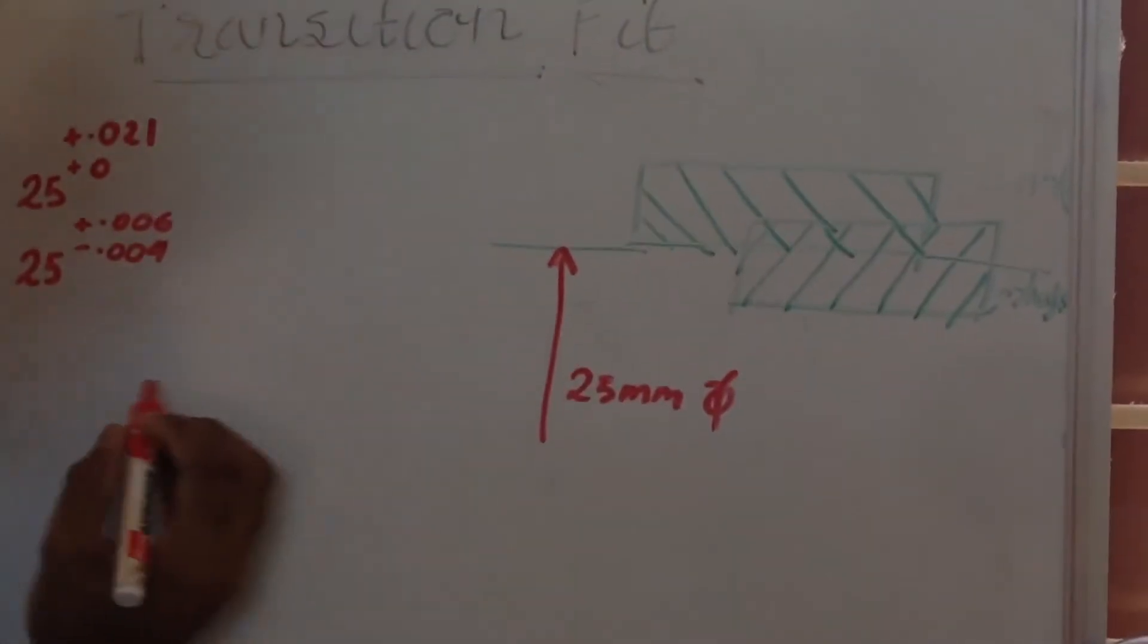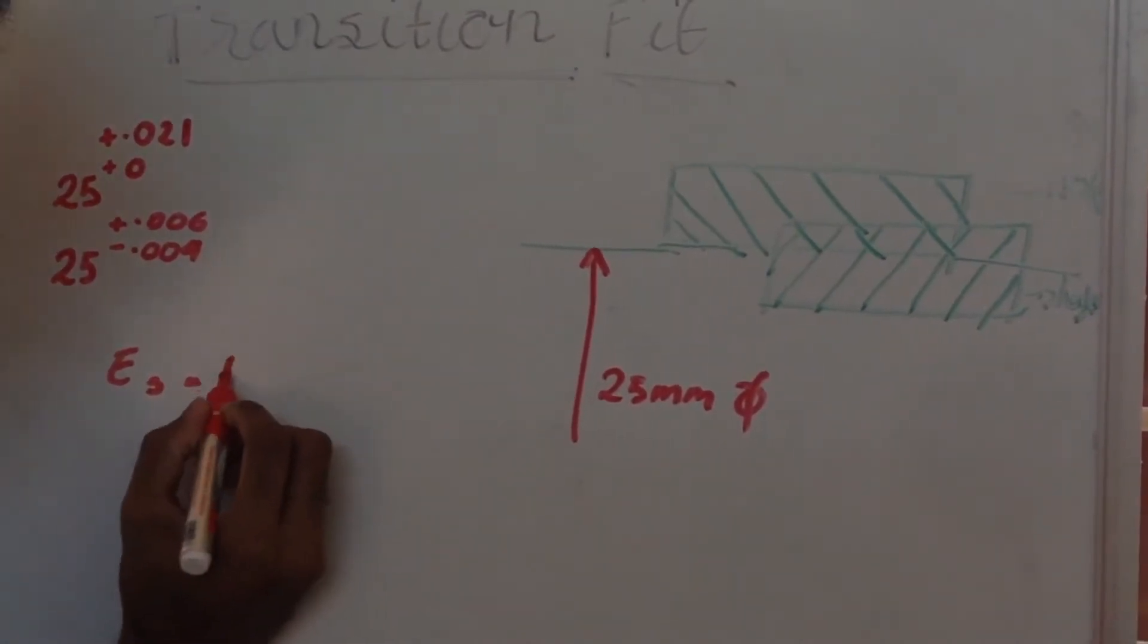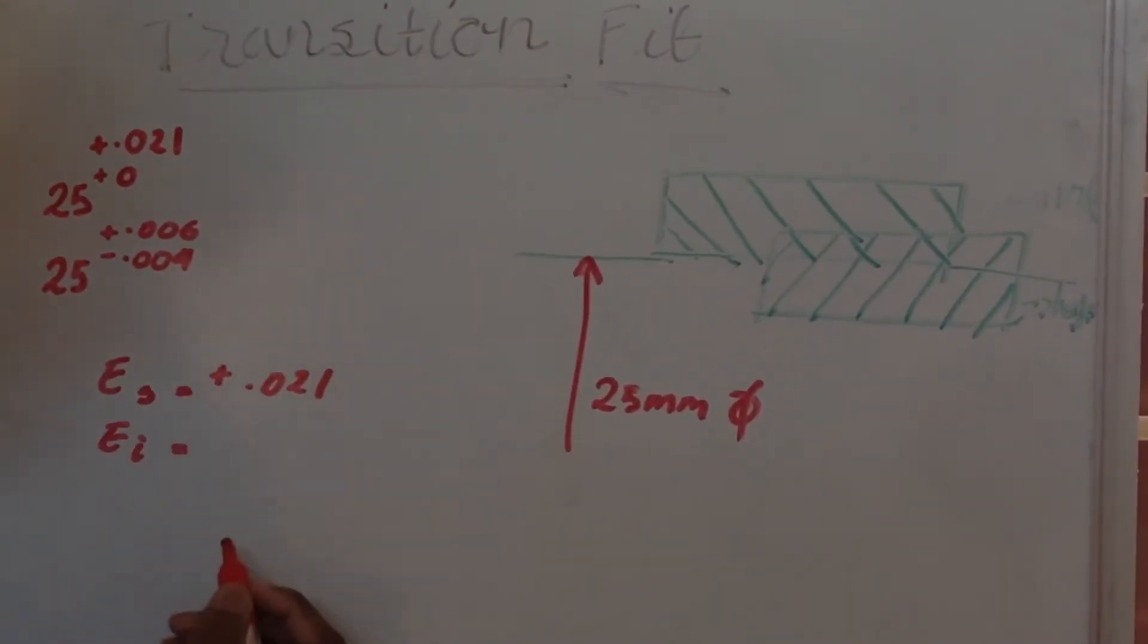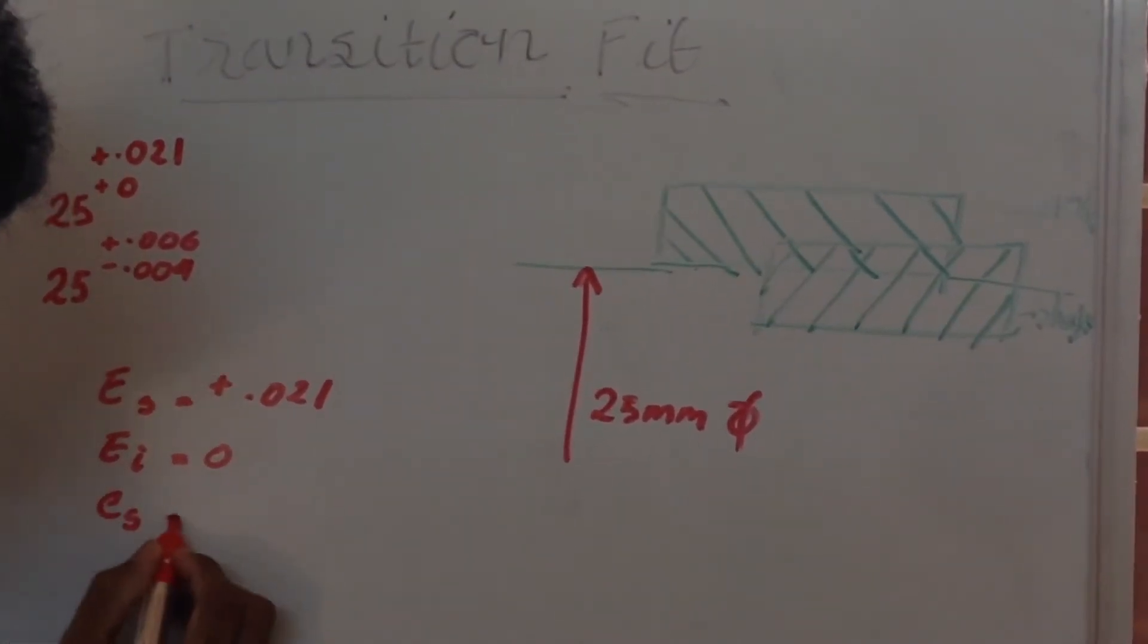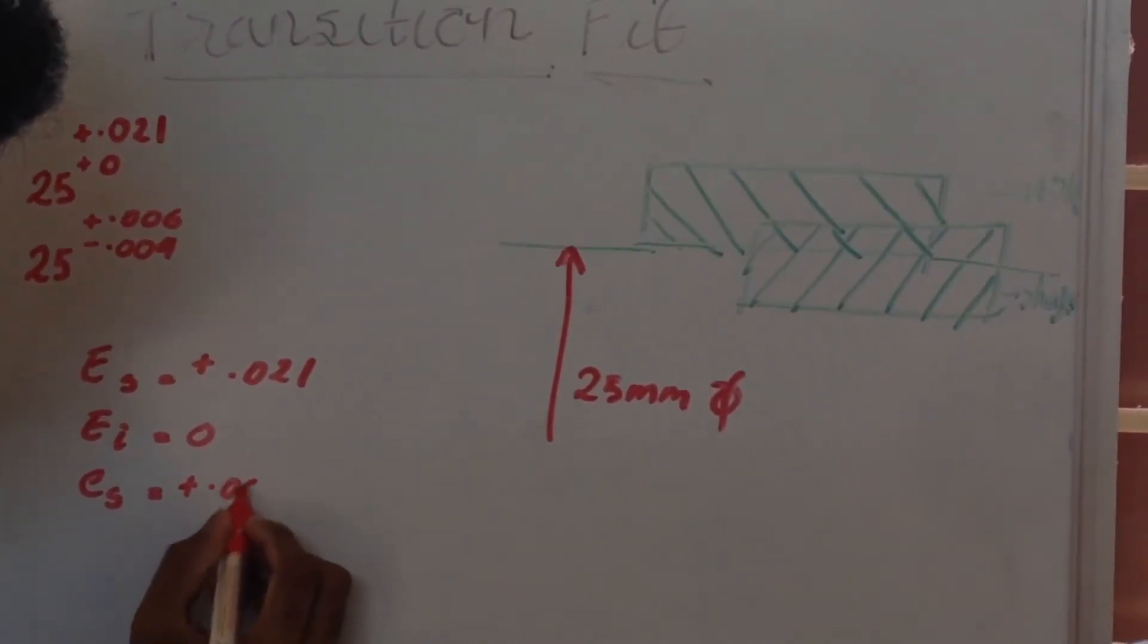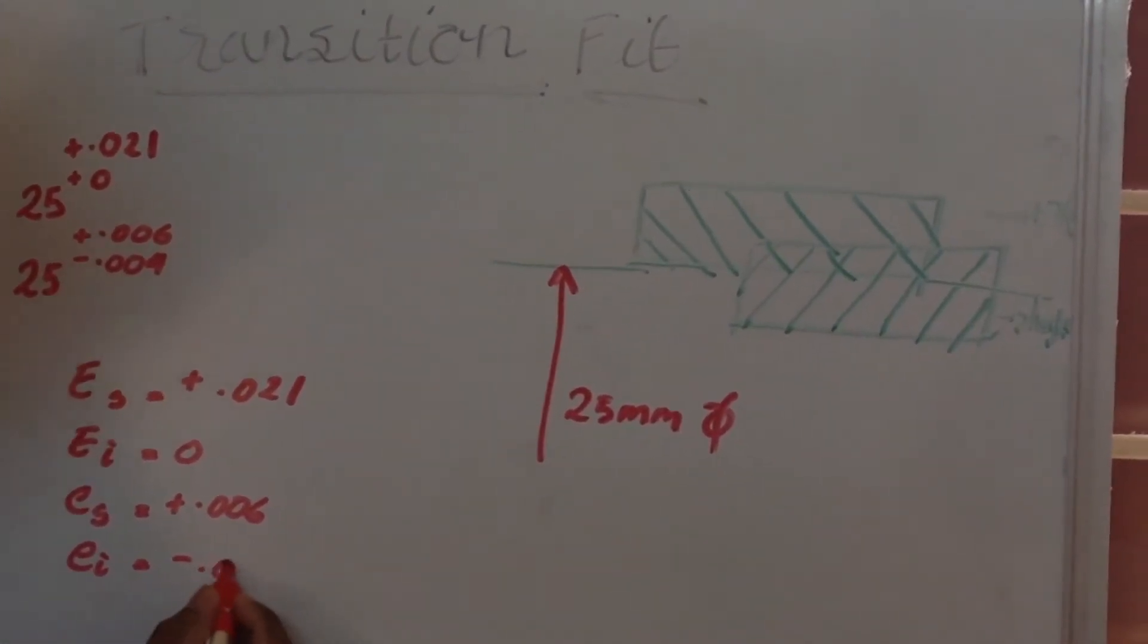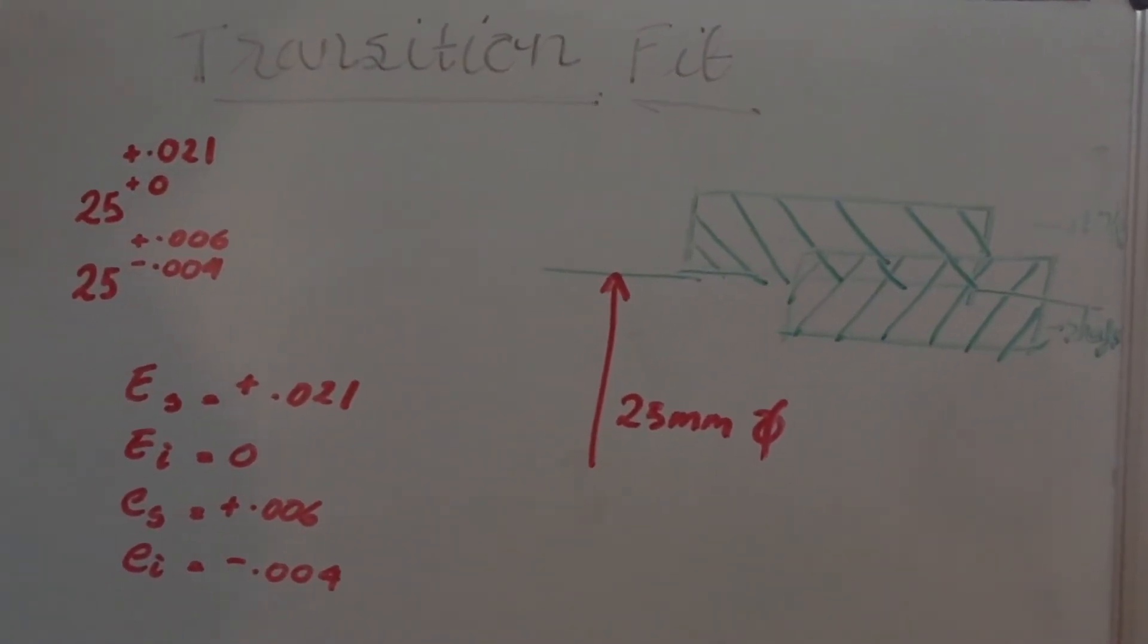Here the upper deviation of hole, that is ES, is equal to plus 0.021, and EI, the lower deviation of hole, is equal to 0. And upper deviation of shaft is equal to ES is equal to plus 0.006, and lower deviation of hole shaft is equal to minus 0.004 for finding maximum clearance and maximum interference.